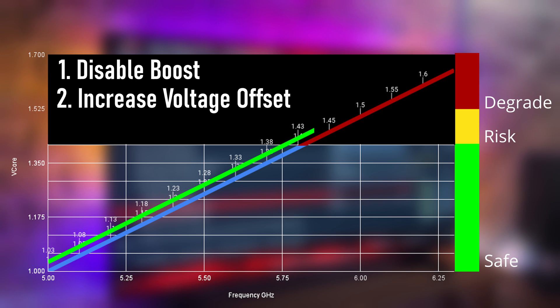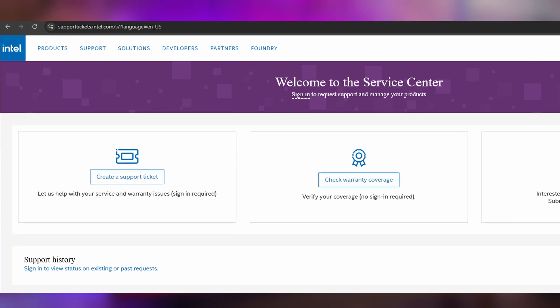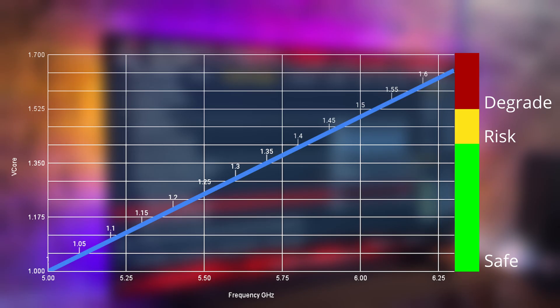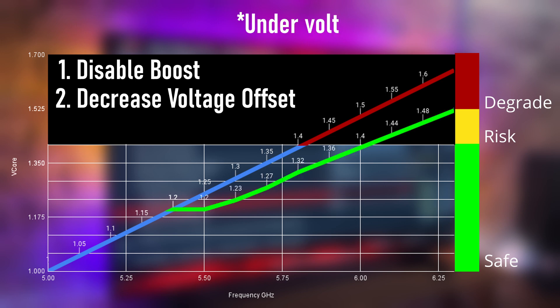Now that your system is stable, I still recommend that you RMA your CPU to get a new Intel CPU. When you get that new CPU, just disable boost and lock all your cores. With a fresh, non-degraded CPU, this will also give you the chance to underclock your CPU.